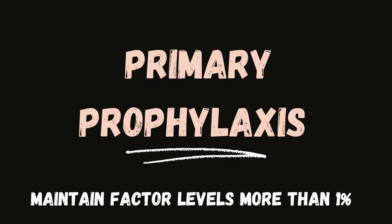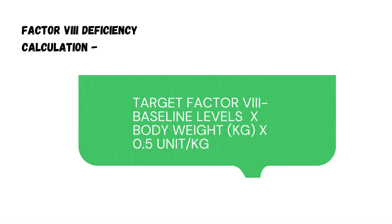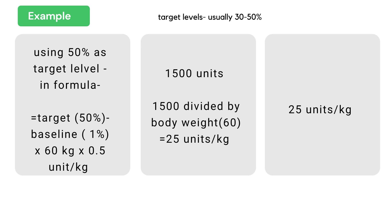Coming to treatment: primary prophylaxis is aimed at maintaining factor levels of more than 1%. Factor 8 dose is calculated by the formula: (target factor 8 level minus baseline level of the patient) multiplied by body weight multiplied by 0.5. Factor 9 deficiency can be calculated with the same formula, with the only exception that 0.5 is replaced by 1.